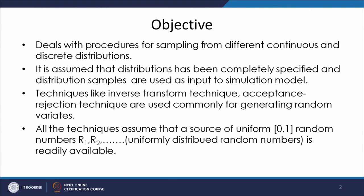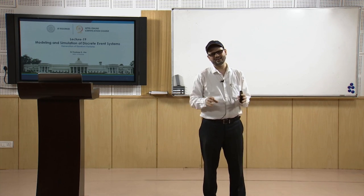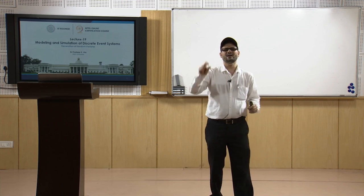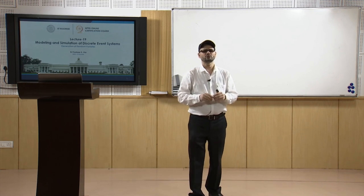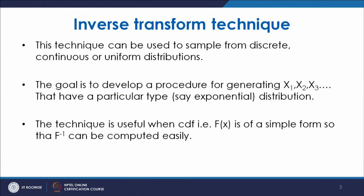All these techniques assume that a source of uniform random numbers is available. These numbers can be generated by different kinds of generators — you can use standard software like Excel; the RAND function gives uniformly distributed numbers. From there you calculate the variates of the desired distribution. The goal is to develop a procedure for generating x1, x2, x3, ... which have a particular kind of distribution function.